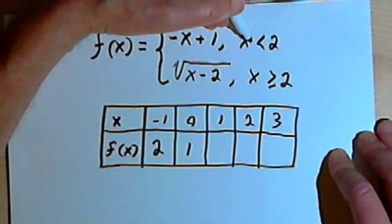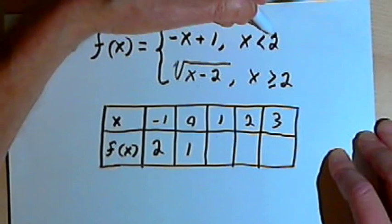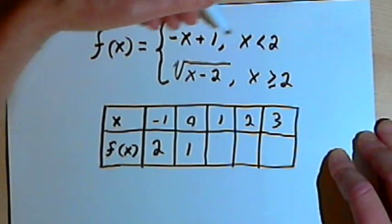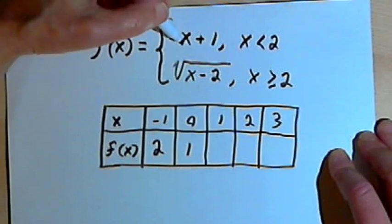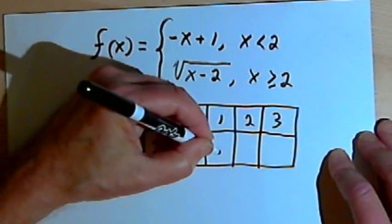When x is 1, that's still less than 2, so I'm still using that first line. I'll have negative 1 plus 1, and that equals 0.